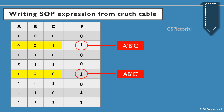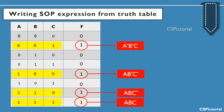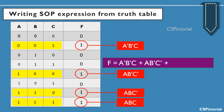Remember: if the value of the variable is 1, write the literal as such; if the value of the variable is 0, write the complement of the literal in its min term. Similarly, we get A·B·C̄ and A·B·C. Finally, we derive the SOP expression by summing up all the min terms.